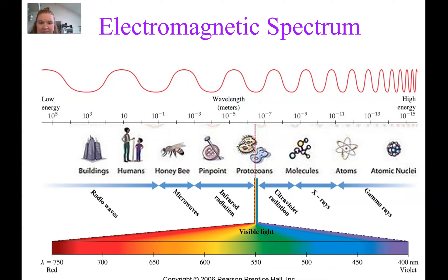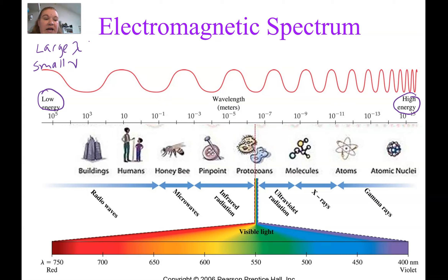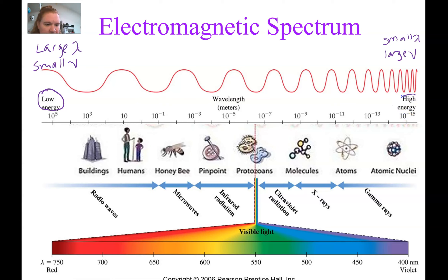Here are all the different types of electromagnetic radiation, in order. On the left we have low energy, large wavelength, and small frequency. On the right we have high energy, small wavelength, and large frequency. We can see that represented by the red wavy line. The actual wavelengths are given in meters, ranging from 10 to the 5th meters on the left all the way down to 10 to the negative 15th meters on the right. It's a very large scale.